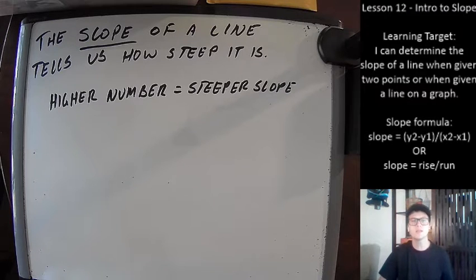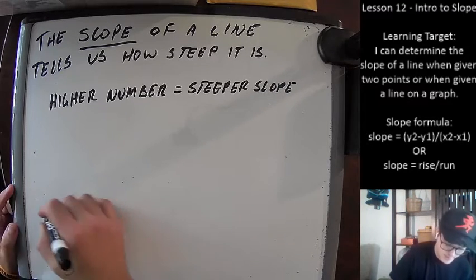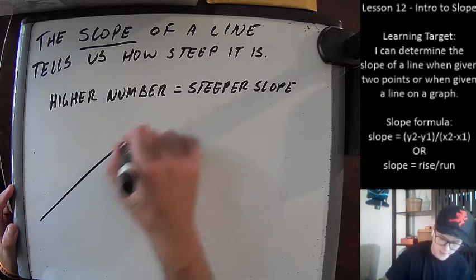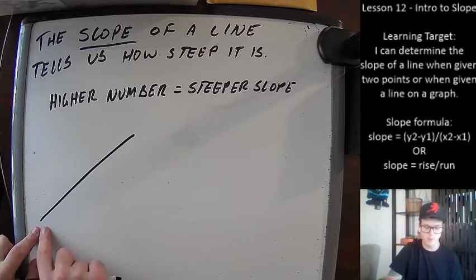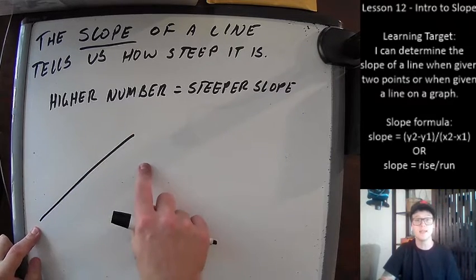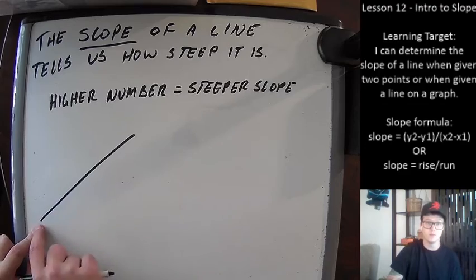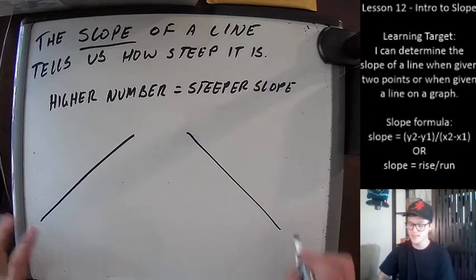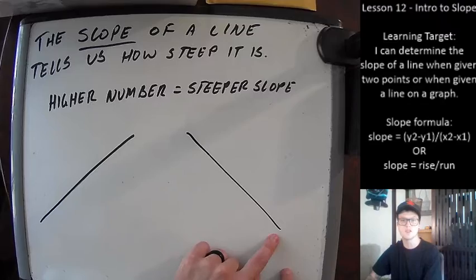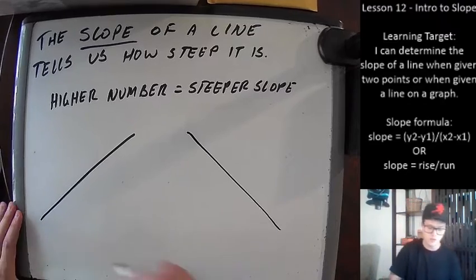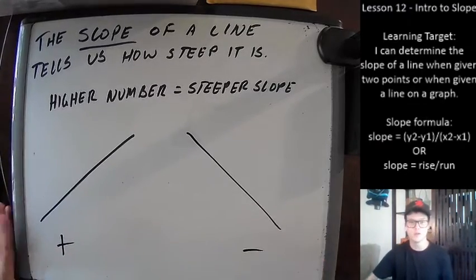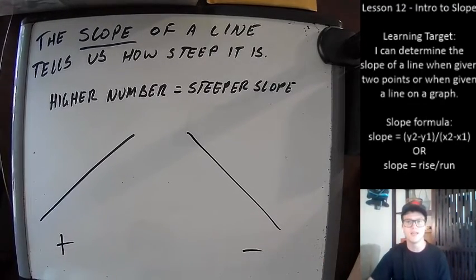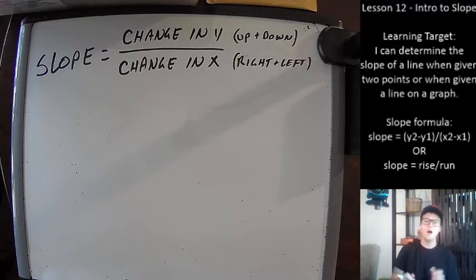In addition to steepness, the slope of a line will tell us if it's a positive or negative slope. A positive slope is one that, if you read it from left to right, is going up. In contrast, if you read the other line from left to right, it's going down — so that one is called a negative slope.